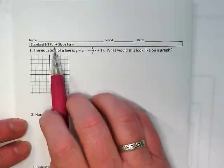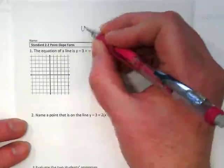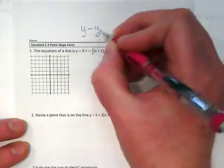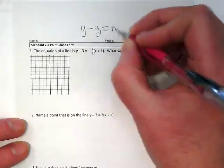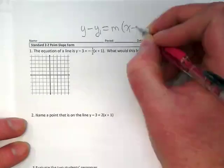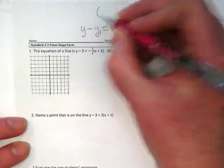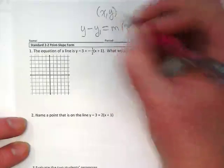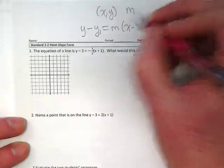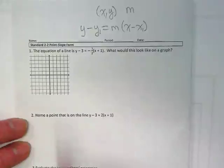Okay, so for standard 2-2, we're looking at point-slope form. That is the equation that looks like this, where this x and this y are a point, an x-y pair, and the m is our slope. So we get point and slope in this equation.